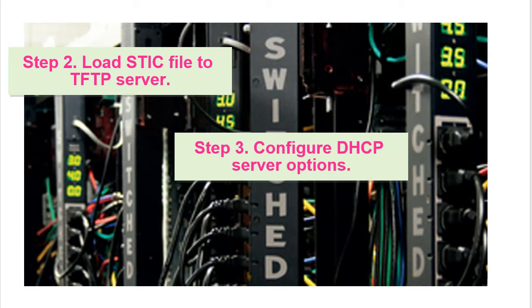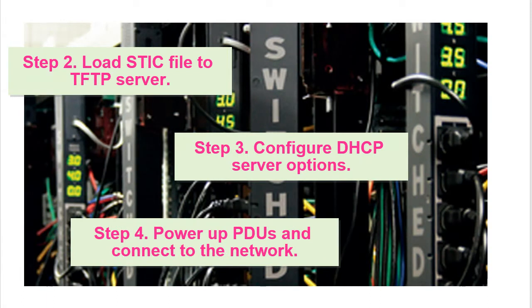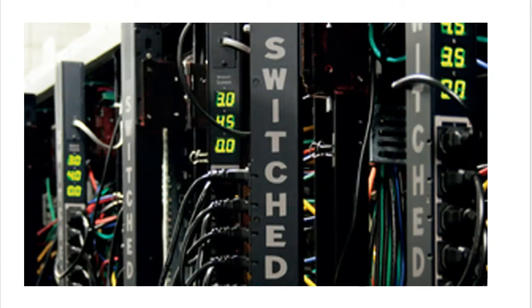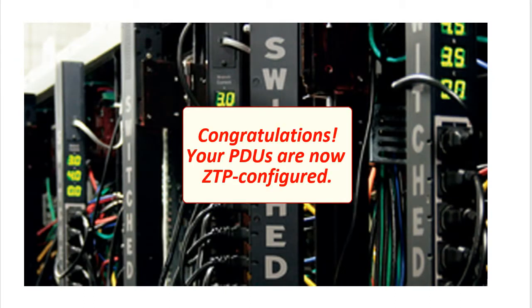Step 3: Configure the DHCP server the PDUs will use. Step 4: Power the PDUs and connect them to the network. The PDU looks for the DHCP server to get the TFTP server location, then pulls the STIC file needed to complete ZTP configuration. Your PDUs are now ZTP configured.